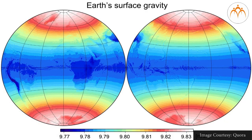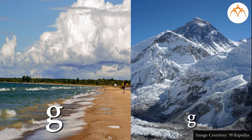On Earth, this value varies with latitude and altitude. The acceleration due to gravity is greater at the poles than at the equator. It is greater at sea level than atop Mount Everest.